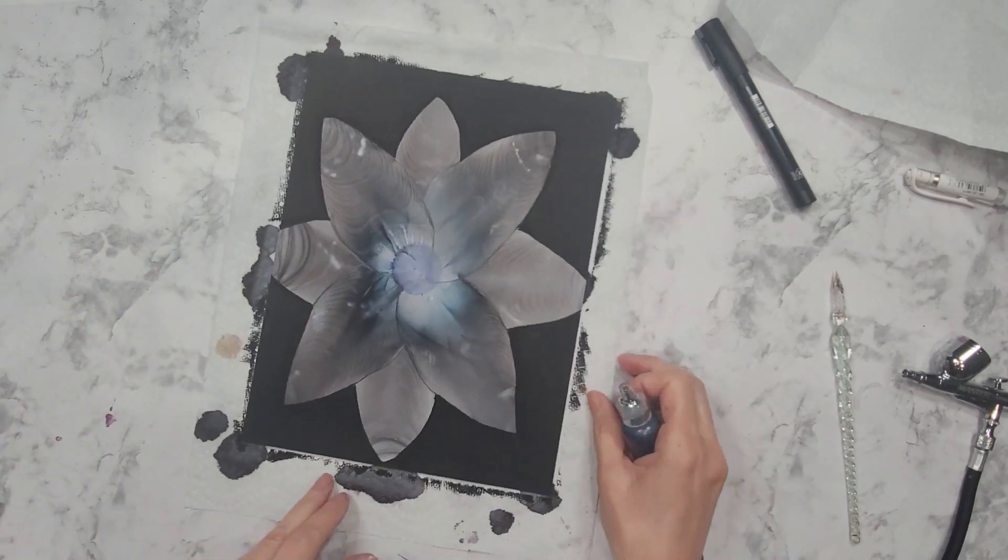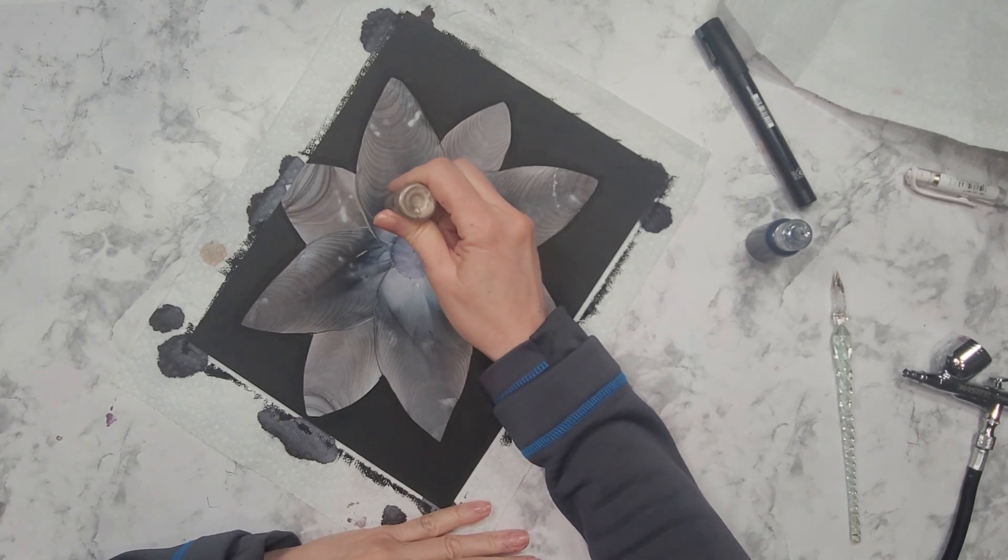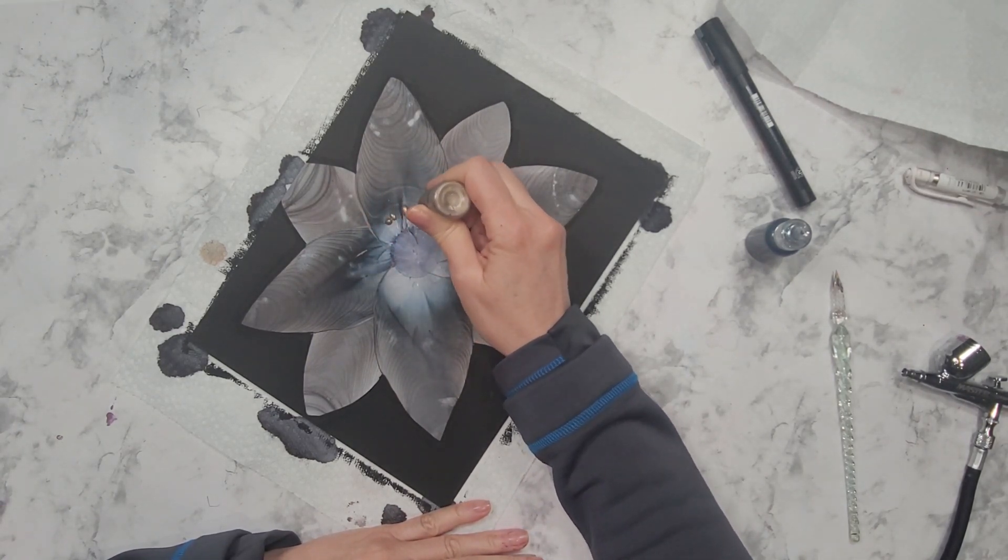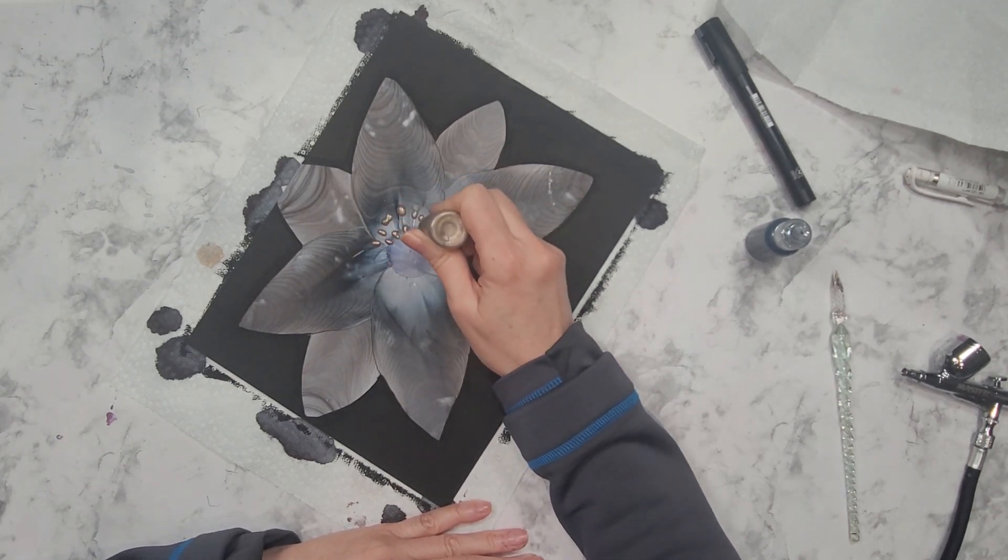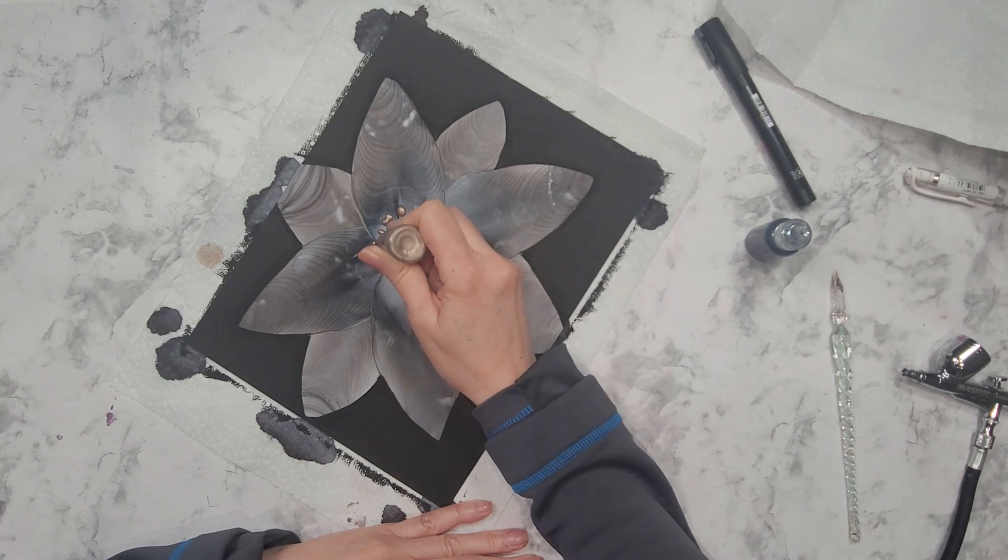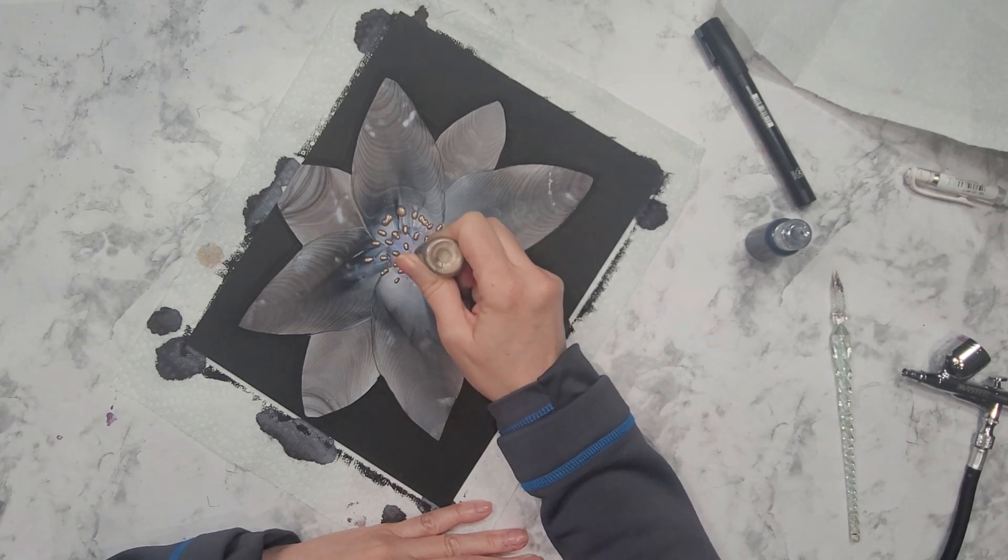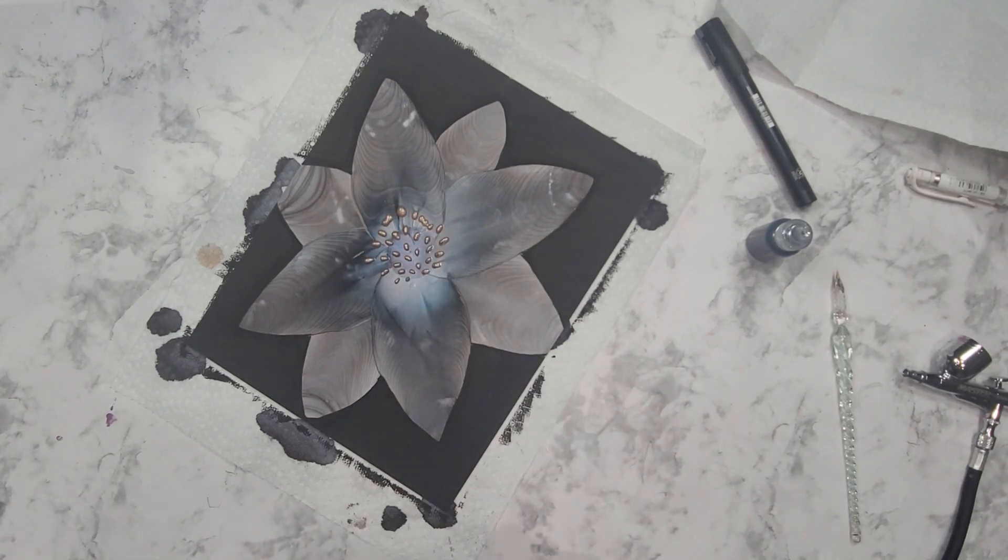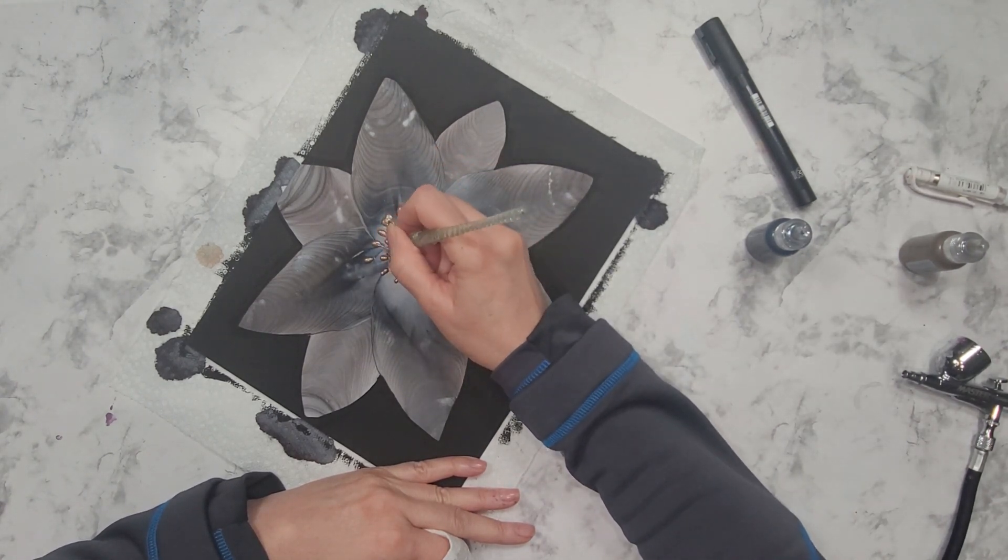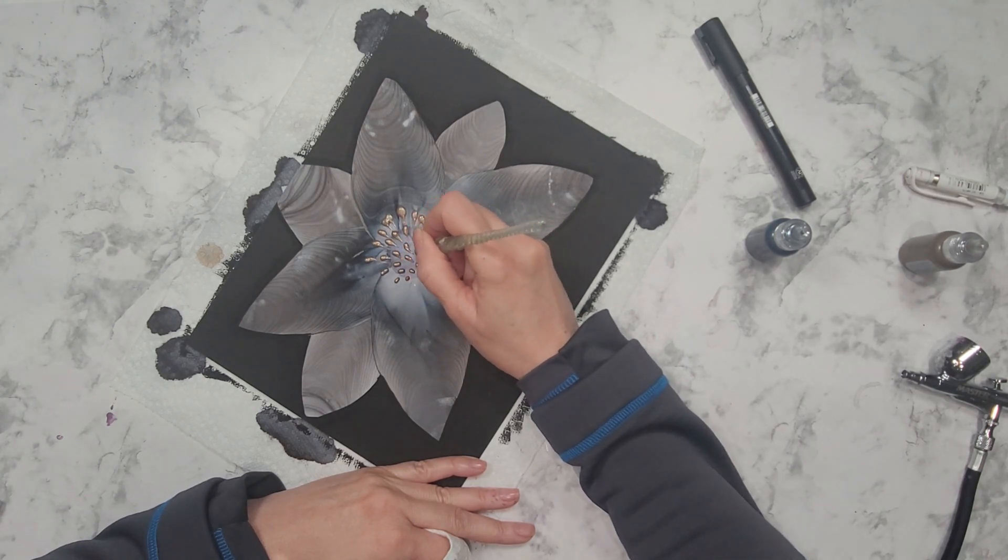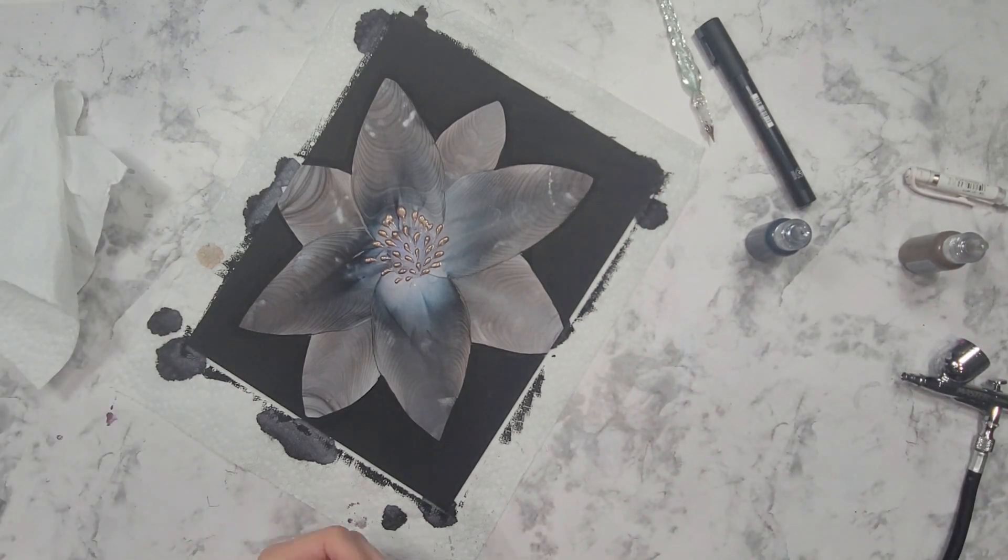Now I'm going to use a glass pen to do the center of this flower and the colors that I'm using are the liquid pearl dimensional paints in bronze and in slate. I'm going to start by putting down my dots and I'm using large size dots for this particular center. I thought because of all the black, I needed something a little bit bold for the center. Once I get down all my dots, I use the glass pen to pull through each of those dots and bring the line towards the center of the flower.